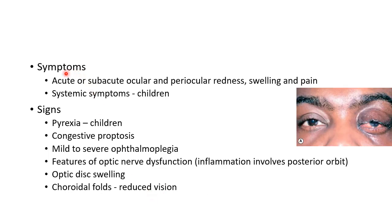Symptoms of IOID include acute or subacute ocular and periocular redness, swelling, and pain. Systemic symptoms can occur in children. Signs include pyrexia in children, congestive proptosis, and mild to severe ophthalmoplegia. There can be features of optic nerve dysfunction, especially when inflammation involves the posterior orbit. There can be optic disc swelling and choroidal folds, which can lead to reduced vision.